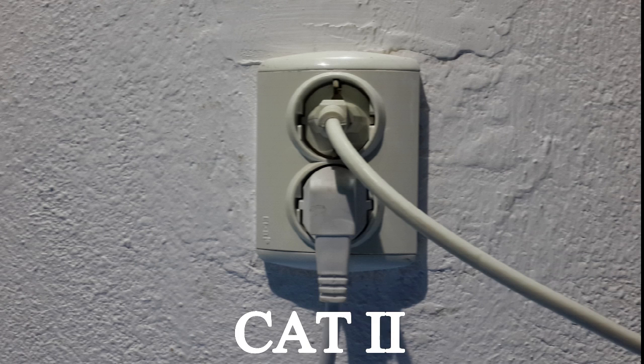CAT 2 means all equipment that we connect to the AC outlet. Anything related to 100 volts, 120, 220, or 240 volts AC is CAT 2 equipment. We should not use CAT 1 equipment on it, because we expose the equipment to damage from high voltage or high current, or we expose ourselves to injury. That means I can use CAT 1 equipment to test electronic boards, but if that equipment has outputs related to AC voltage, I must use CAT 2 equipment on those outputs.